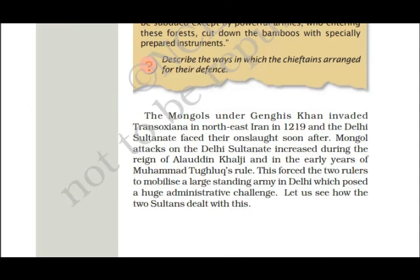The Mongols under Genghis Khan invaded Transoxiana in northeast Iran in 1219, and the Delhi Sultanate faced their onslaught soon after. Mongol attacks on the Delhi Sultanate increased during the reign of Alauddin Khalji and in the early years of Muhammad Tughlaq's rule. Both these sultans raised very large armies to resist the Mongols, which posed a huge administrative challenge.